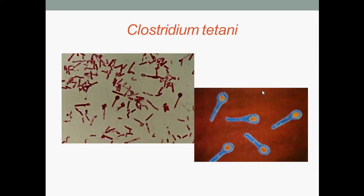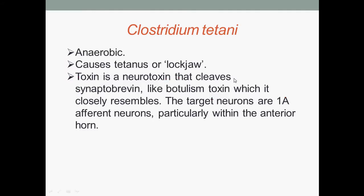Here we have Clostridium tetani under the microscope — they do appear like tennis rackets. Clostridium tetani are anaerobic and cause tetanus, or lockjaw. Their toxin is a neurotoxin that cleaves synaptobrevin, closely resembling the botulism toxin. The target neurons are the 1a afferent neurons, particularly within the anterior horn.